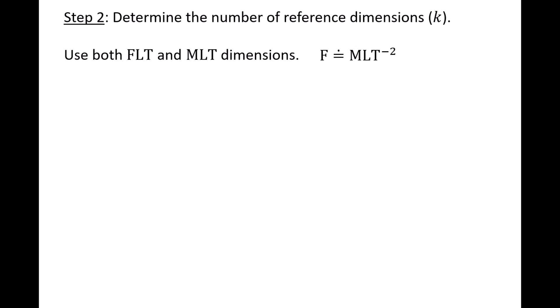We use the equal symbol with a dot on top to indicate equality of dimensions. Rearranging this equation, we see that mass M has dimensions of force F, length L to the negative 1, time T squared. Let's find the dimensions of our five variables: delta PL, V, D, rho, and mu.